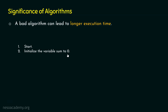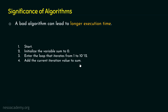In order to calculate the sum of first 10 to the power of 12 natural numbers, we can use loops. We can iterate from 1 to 10 to the power of 12, and with each iteration we can add the current iteration value to the sum variable. Step three: enter the loop that iterates from 1 to 10 to the power of 12. Step four: add the current iteration value to sum.